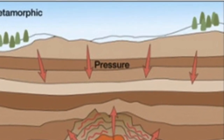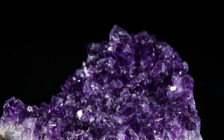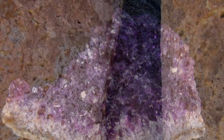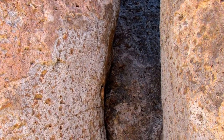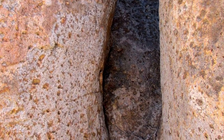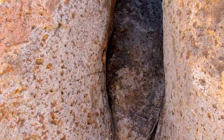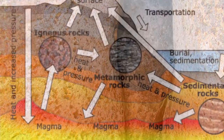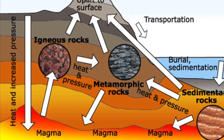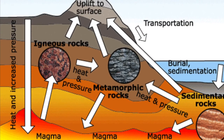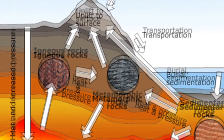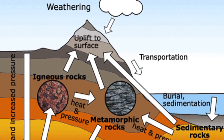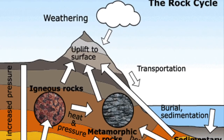Think about a butterfly. It begins its life as a caterpillar. Over time, the caterpillar goes through a metamorphosis, or a change, and it becomes a butterfly. Metamorphic rocks are like a butterfly — they begin life as a sedimentary or igneous rock, and over time, heat and pressure change them into metamorphic rocks.